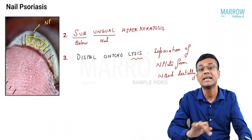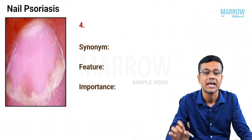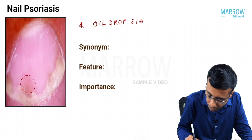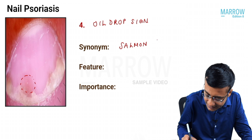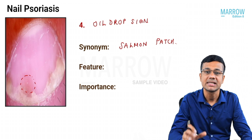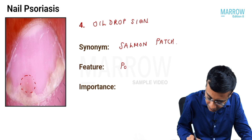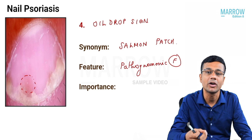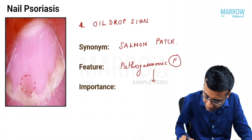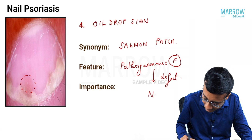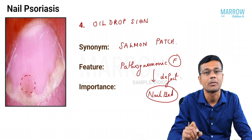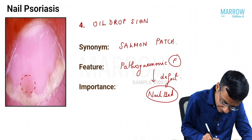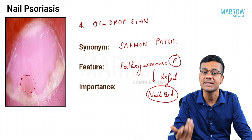The most important nail sign is the oil drop sign, also known as salmon patch — a pathognomonic feature of nail psoriasis. Pitting can be seen in multiple conditions, but the oil drop sign is seen only in nail psoriasis. The defect here is in the nail bed, making it a deeper pathology, whereas pitting is a nail matrix problem.